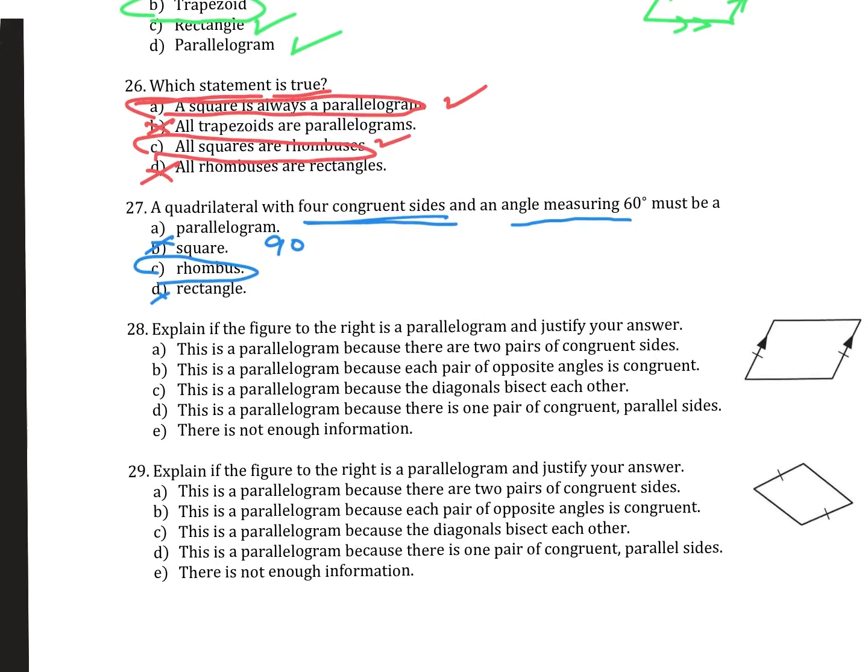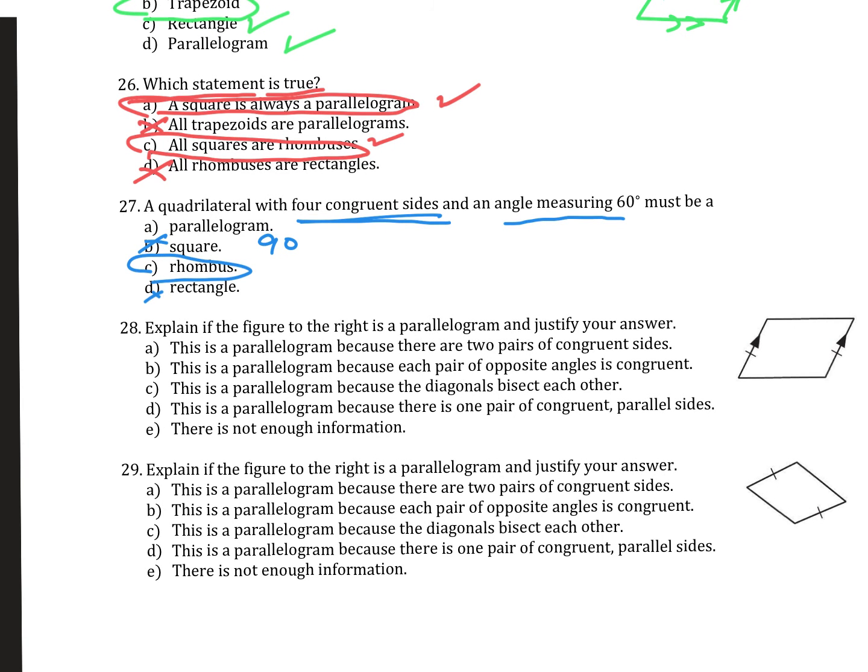Number 28. Explain if the figure to the right is a parallelogram and justify your answer. Well, we've got opposite sides that are congruent. This is a parallelogram because we have one pair of congruent parallel sides.